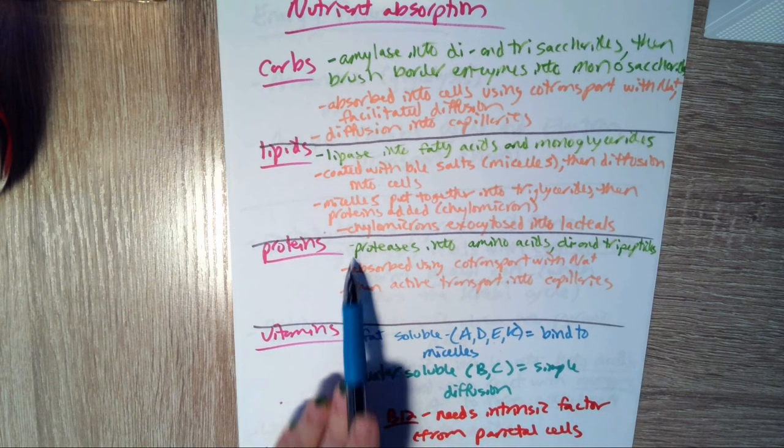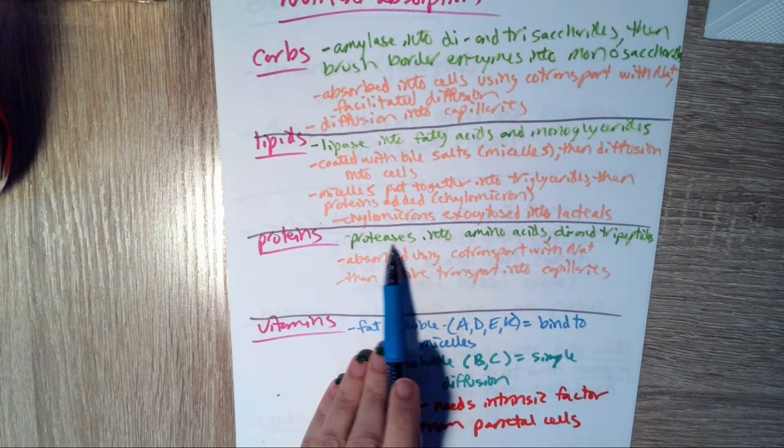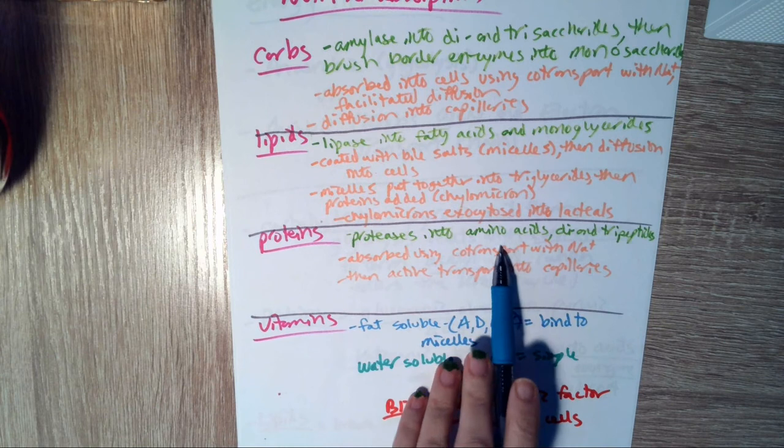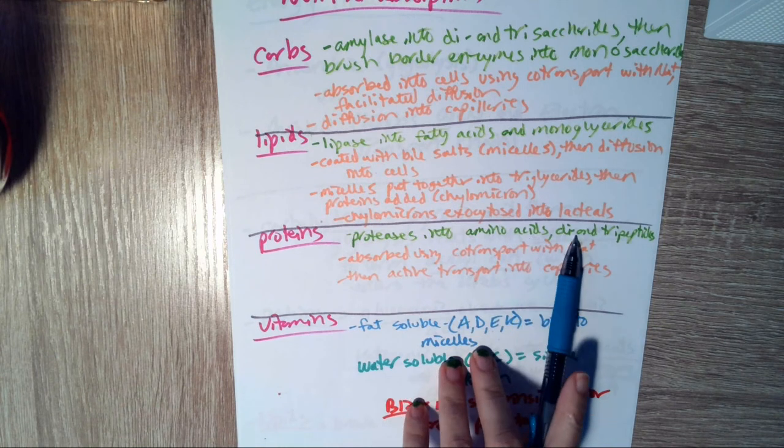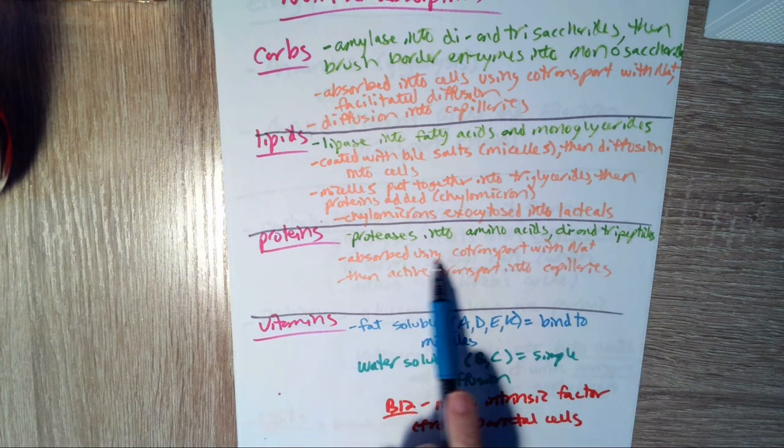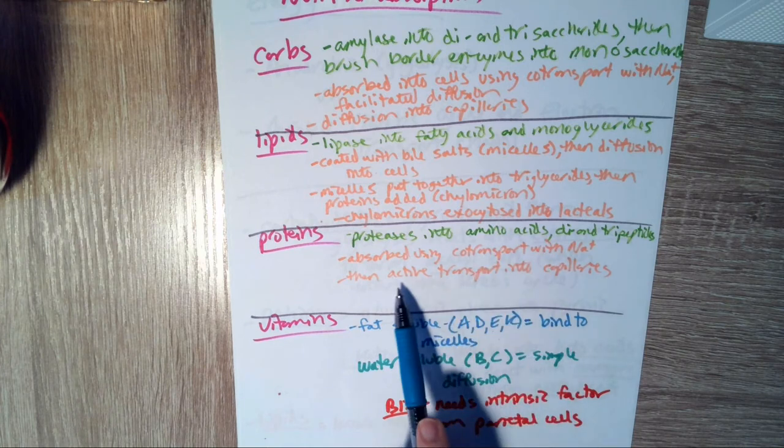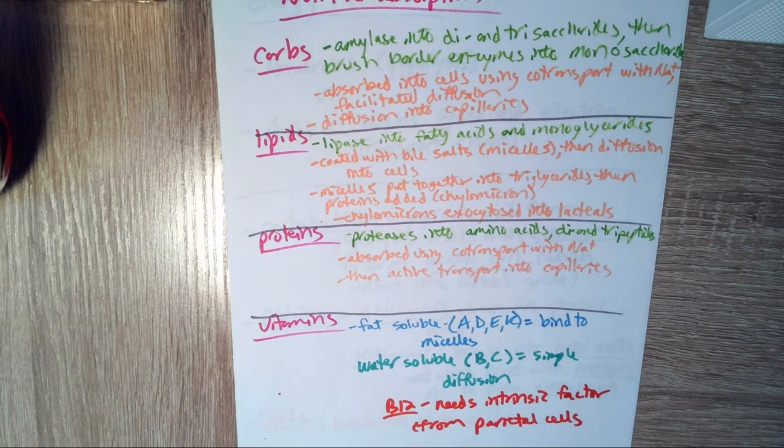For the proteins, we finish breaking them up with proteases, which are found in pancreatic juice. We're going to break them into amino acids, dipeptides, and tripeptides. Those are co-transported with sodium into the intestinal epithelium. And then we use active transport into the capillaries.